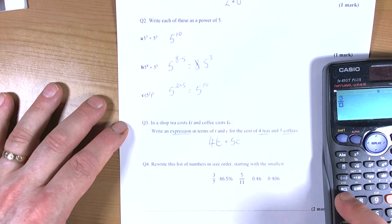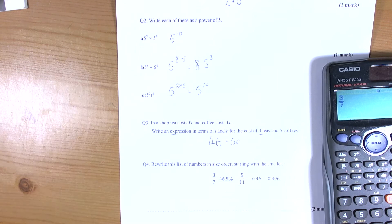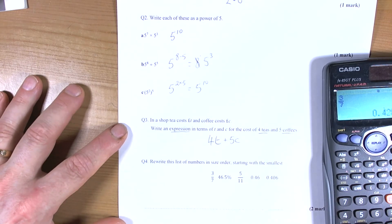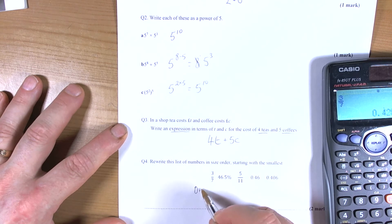So 3/7 press equals. Press the change key. So 0.428 recurring.